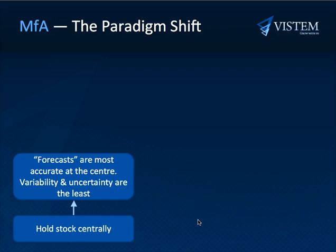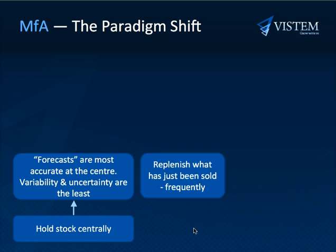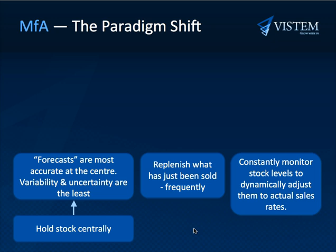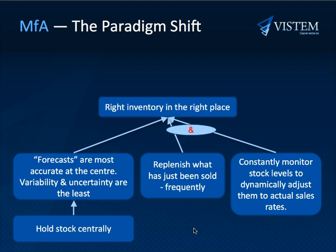No longer do we replenish according to a lousy forecast. Instead, we replenish frequently just what was sold, and no more. Since demand does vary over time, we constantly monitor all stock levels and adjust them dynamically and frequently to actual demand. This means we will always have the right inventory in the right place in the right quantities.